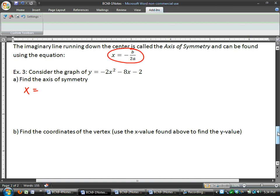So, x is equal to opposite of b. My b value is negative 8. So, it becomes positive 8 over 2 times my a value, which is negative 2. So, when I solve this, I get 8 over 2 times negative 2 is negative 4. 8 divided by negative 4 is negative 2. So, my axis of symmetry for this graph is at the x value negative 2.